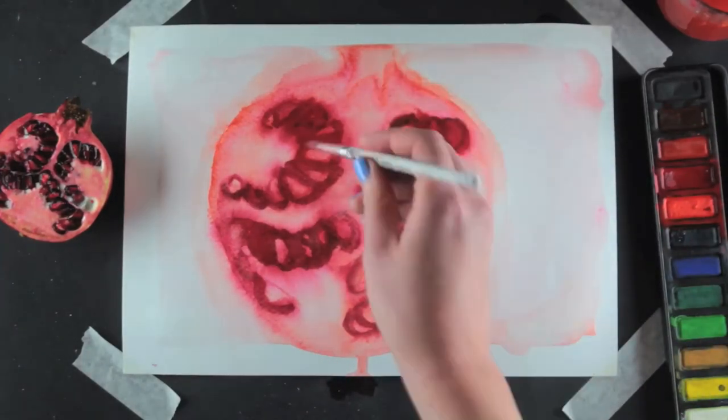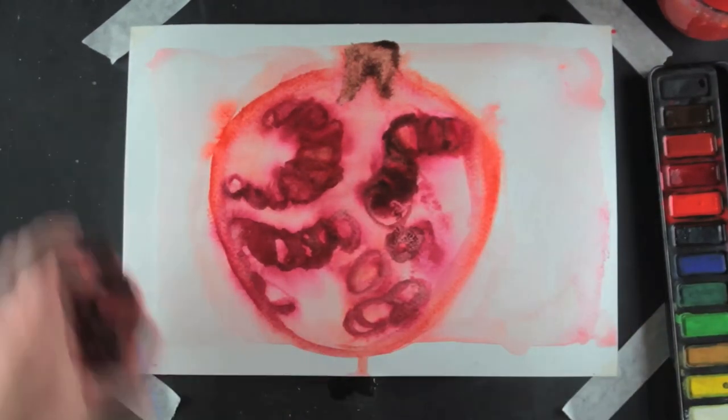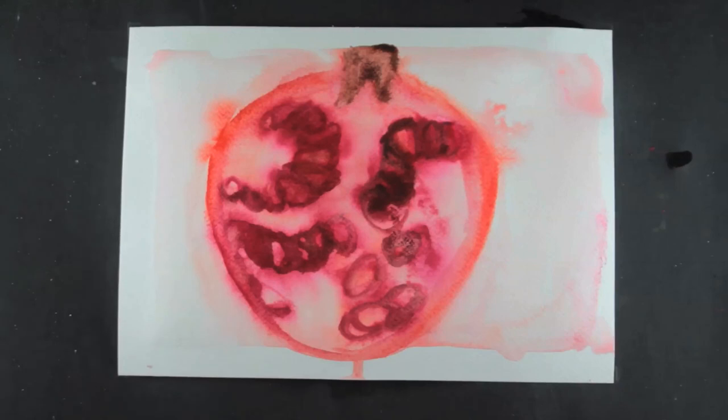I add a light wash of diluted red to the background and make final adjustments to the pomegranate. And that's how to use the wet on wet technique to paint a watercolour in response to Anya Makin's art. Upload it to your Instagram.